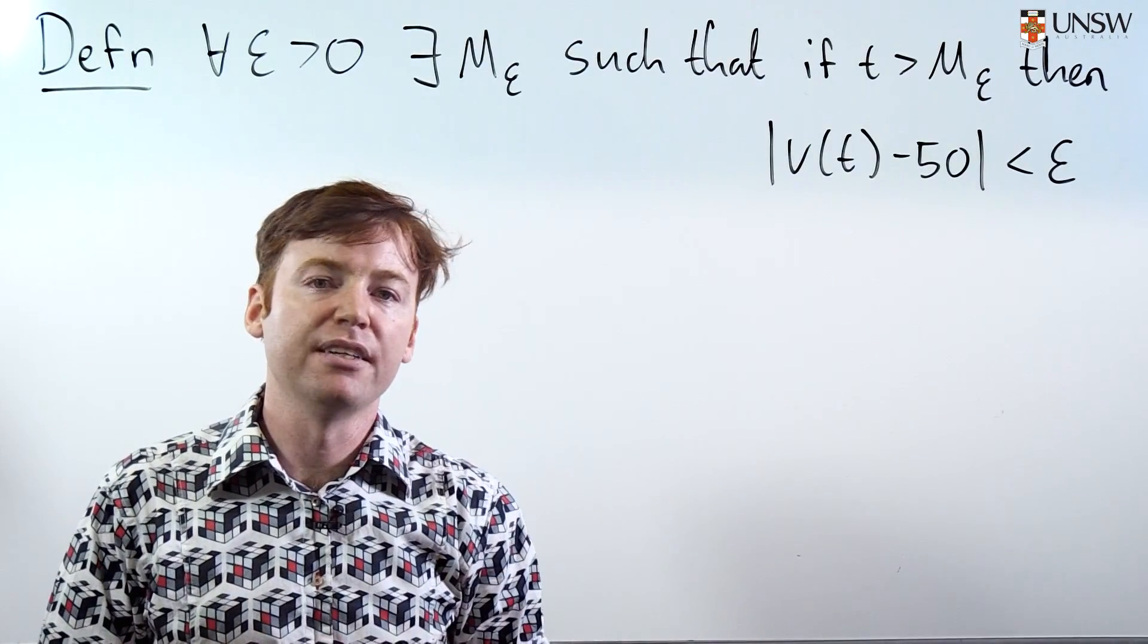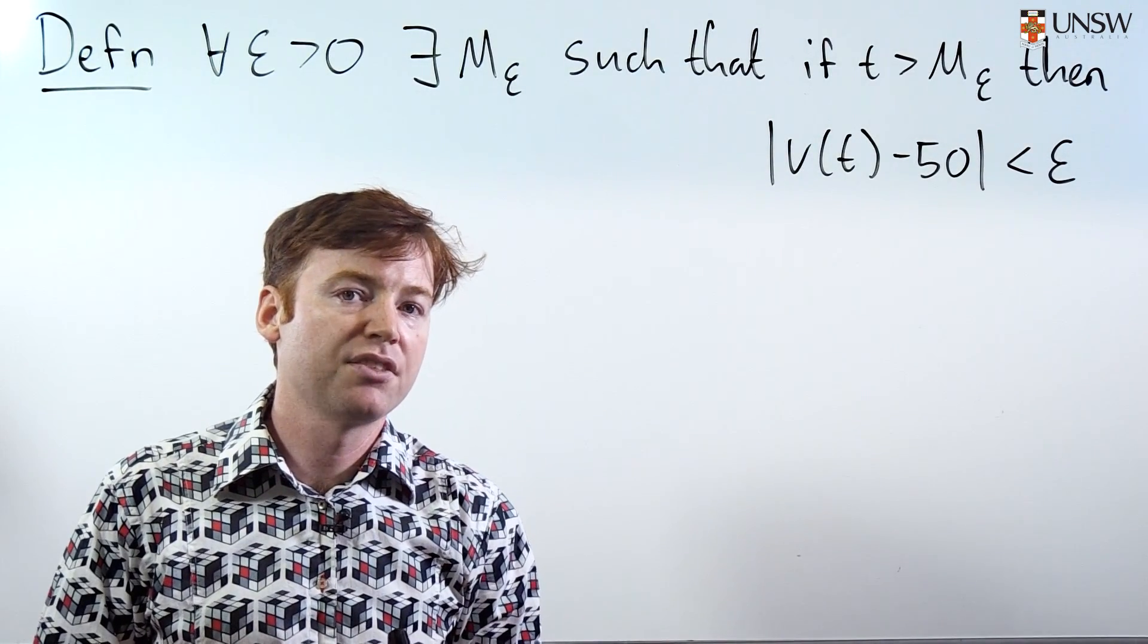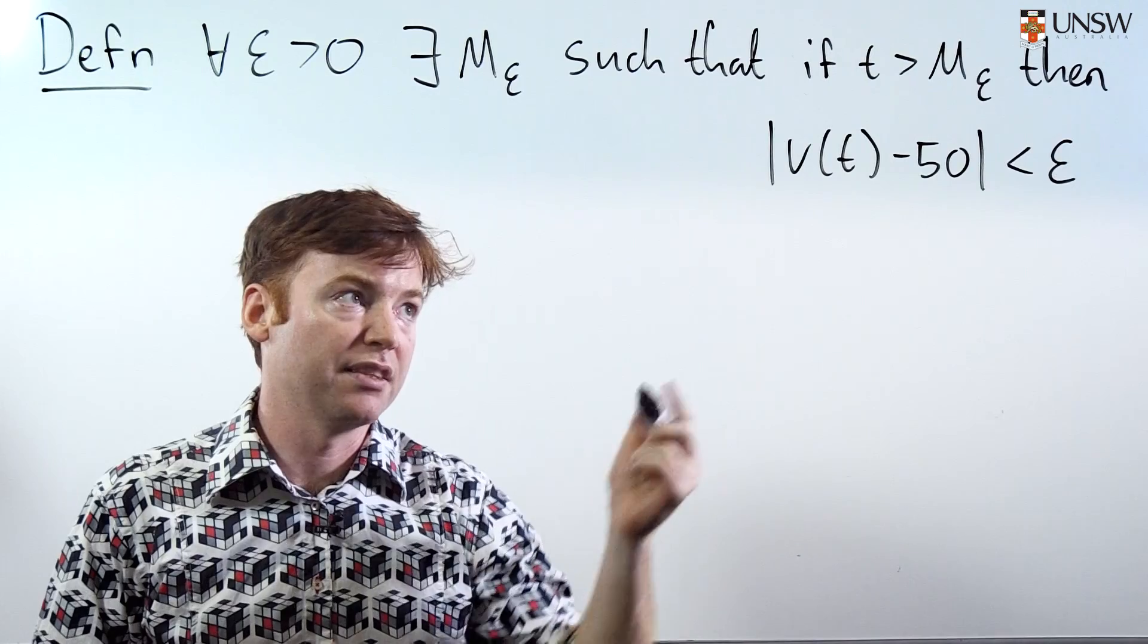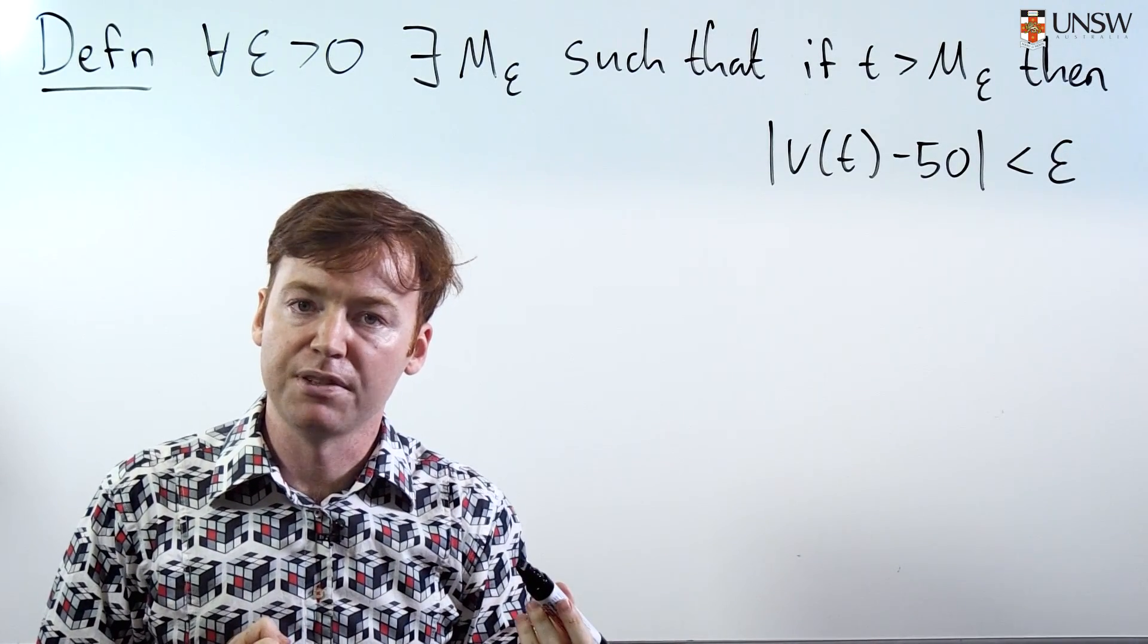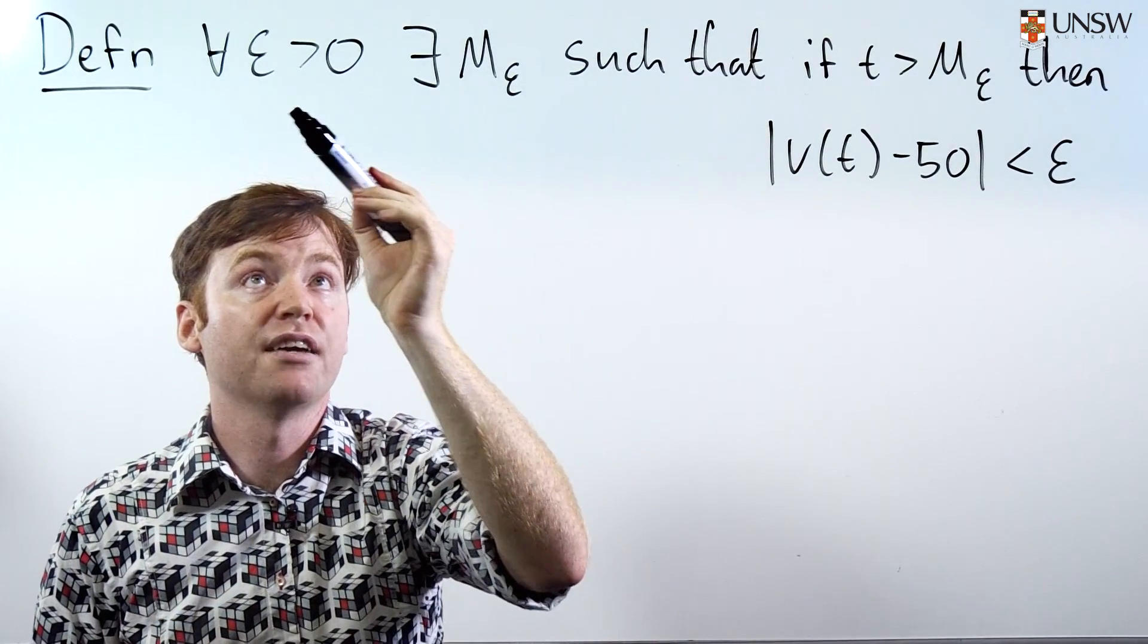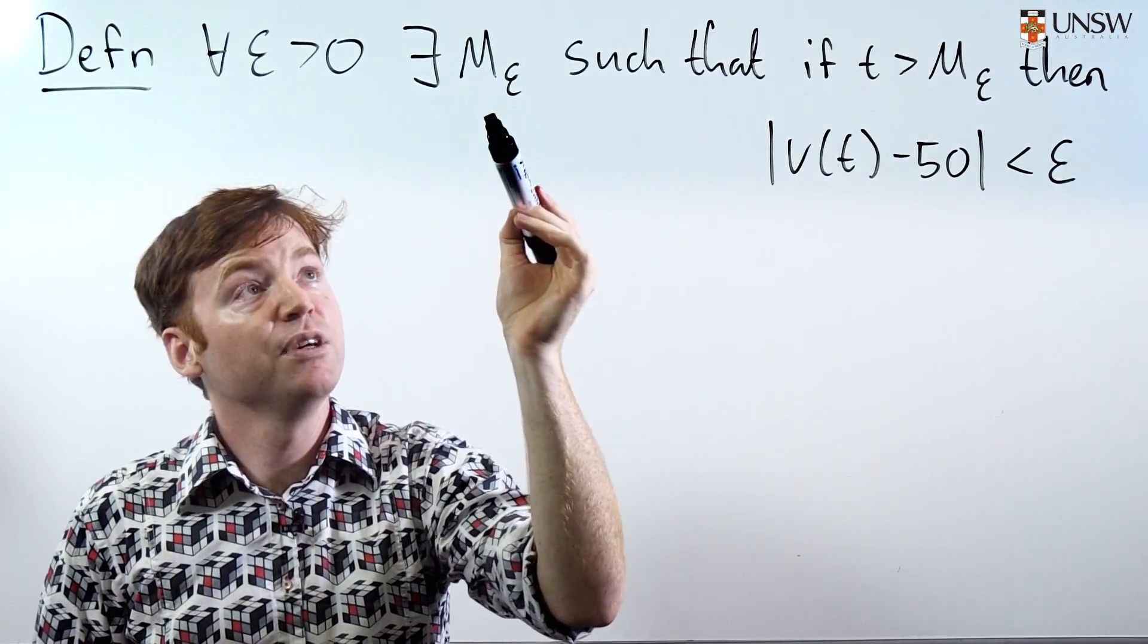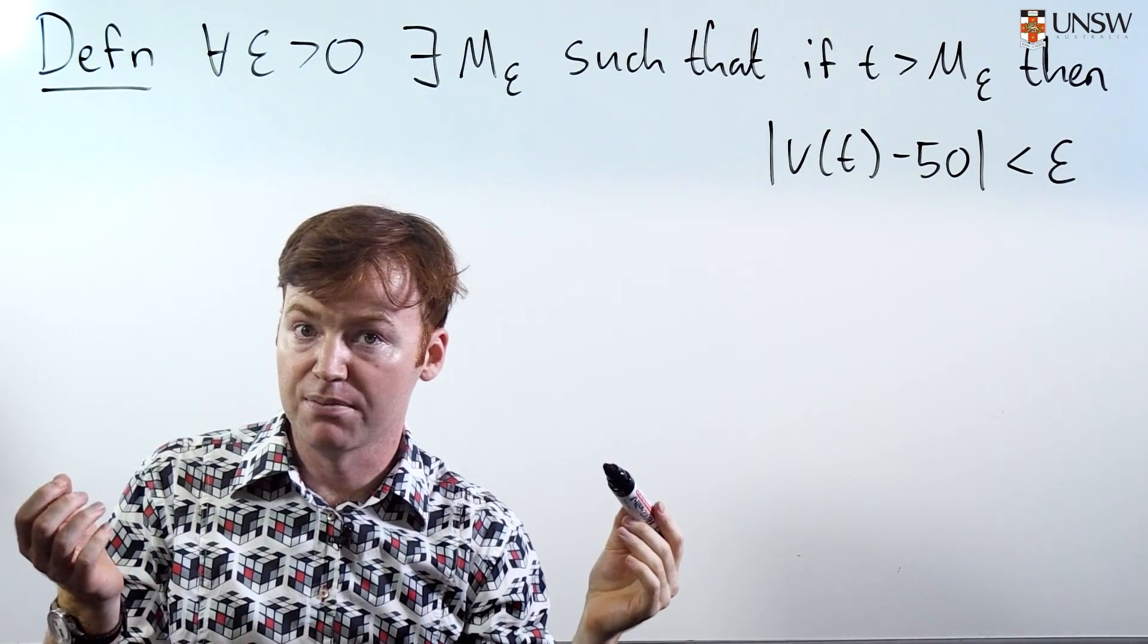So now that we've been introduced to the formal definition of a limit at infinity, let's use it to prove that the limit of v of t as t goes to infinity is 50. Formally, I'll remind you, it means that for every epsilon greater than zero, we need to find the M epsilon. So it's a game. You're given some epsilon, maybe you don't exactly know what its value is.